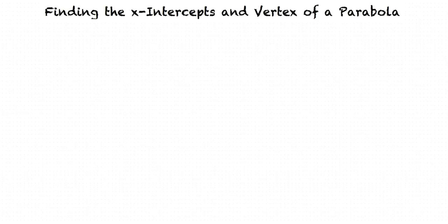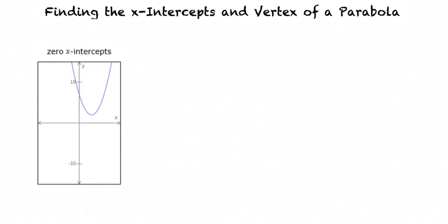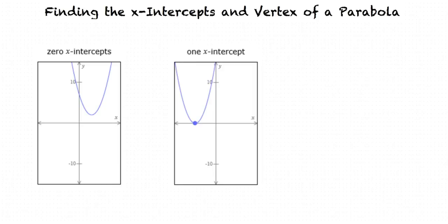A parabola can have 0, 1, or 2 x-intercepts. A parabola has 0 x-intercepts if it never touches or crosses the x-axis. A parabola has 1 x-intercept if it only touches the x-axis. A parabola has 2 x-intercepts if it crosses the x-axis twice.